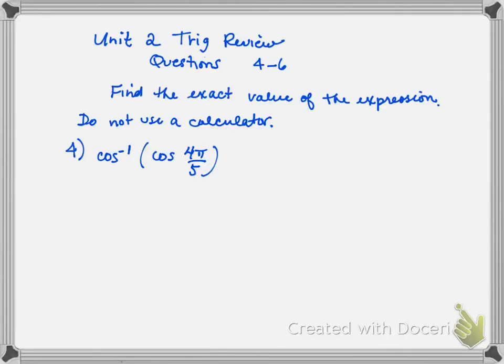This is the unit 2 trig review, questions 4 through 6. The directions say to find the exact value of the expression — do not use a calculator. Number 4 says we have to find the inverse cosine of the cosine of 4π/5. Note that the inverse cosine is the inverse operation of cosine, so most of the time these two will cancel each other out and you'll just have the angle left over. But sometimes you have to move the angle.